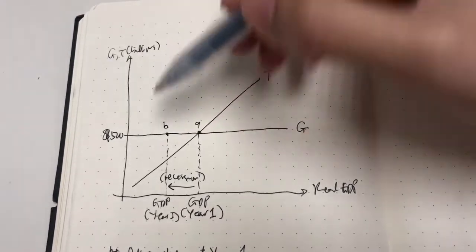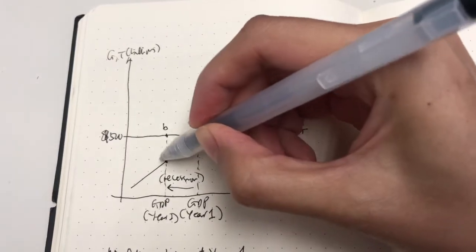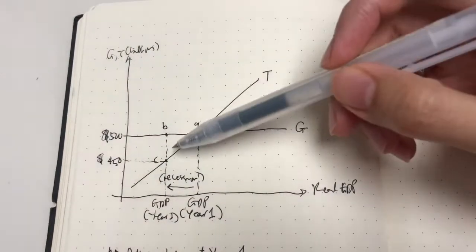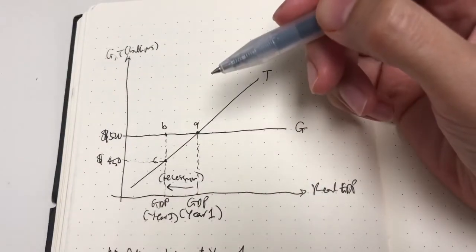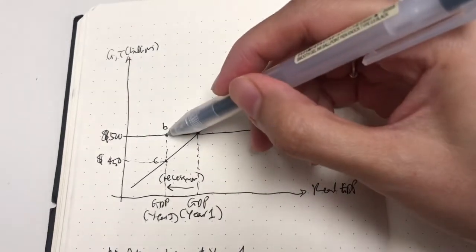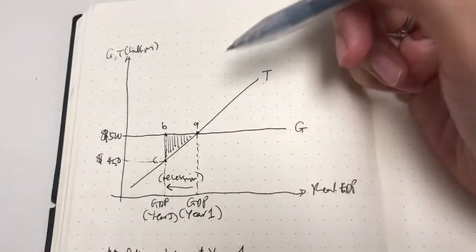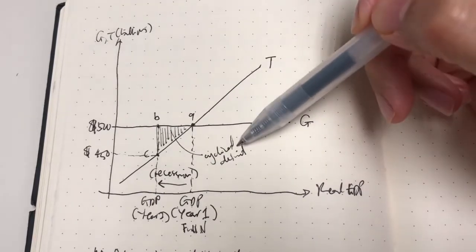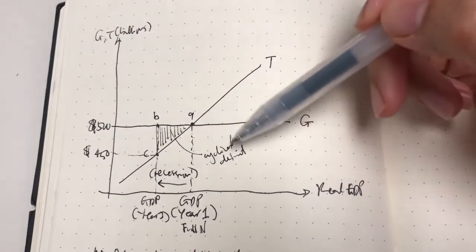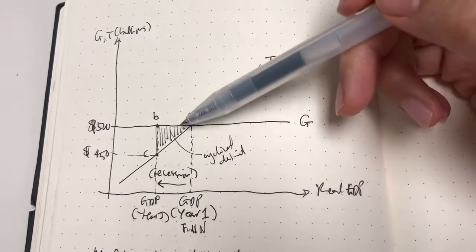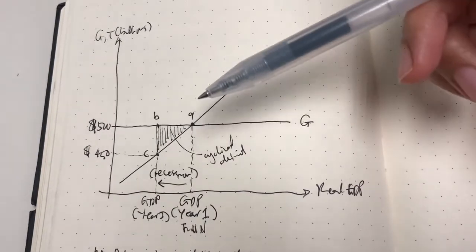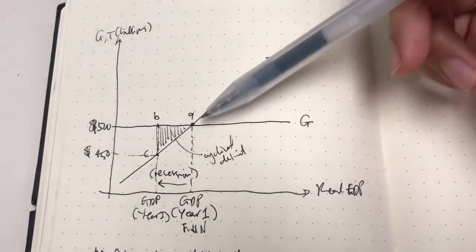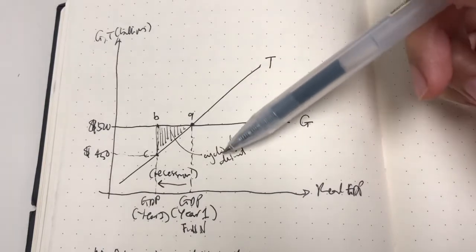Government spending is $500 billion still. However, taxation at point C has fallen to $450 billion. So we have a budget deficit here because G is higher than T. This deficit area is also known as a cyclical deficit, because it arises due to the cyclical phase of the business cycle — recession. This budget deficit is not a result of discretionary fiscal policy; rather, it happens as a byproduct of the automatic stabilizer, because when a recession happens, tax revenues automatically decline.